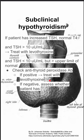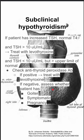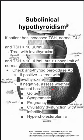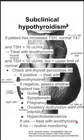If the patient does not have thyroid peroxidase antibodies, you then want to assess whether the patient has a goiter, if the patient is symptomatic with hypothyroid symptoms, if the patient is pregnant, if the patient has ovulatory dysfunction with infertility, or if the patient has hypercholesterolemia. If the patient has any of these, you also want to treat with levothyroxine.